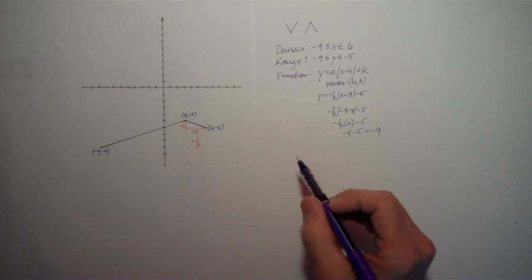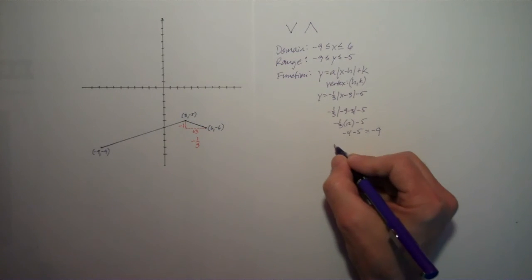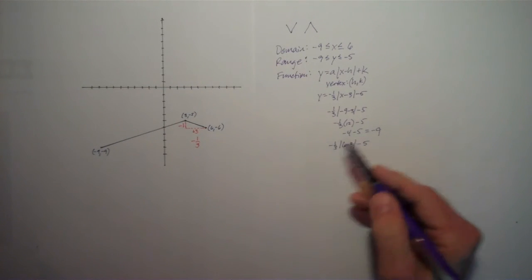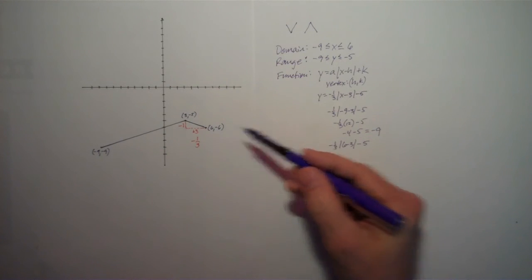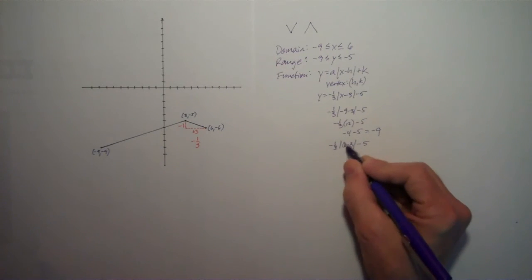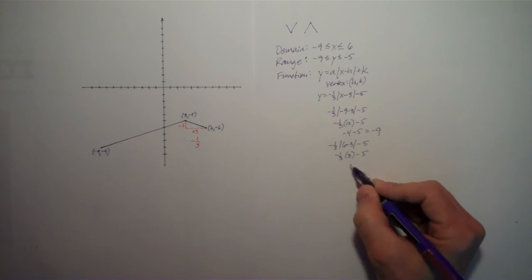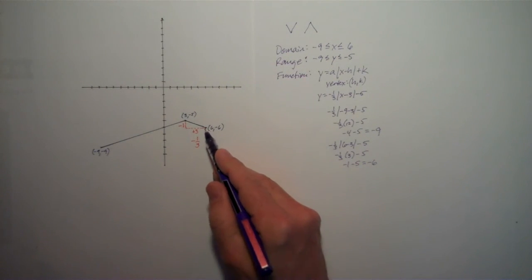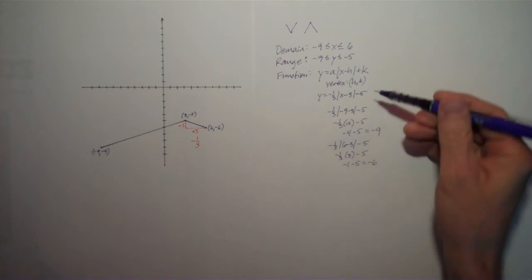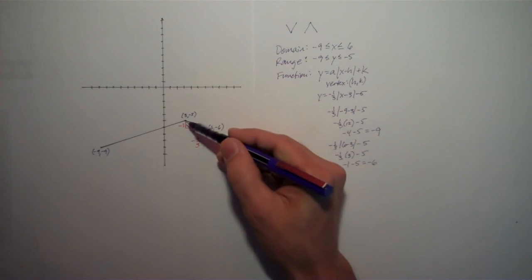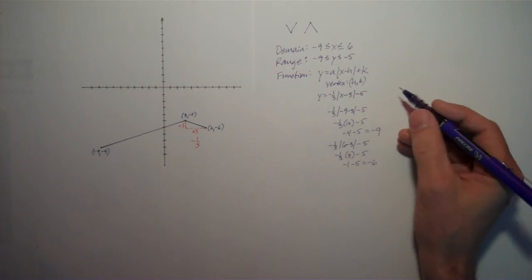And let me just try the x-coordinate, 6, negative 6. If I take negative 1 third times the absolute value of 6 minus 3 minus 5. I'm just replacing the x variable with 6. I get 6 minus 3 is 3. The absolute value of that is still 3. So negative 1 third times 3 minus 5. Negative 1 third of 3 is negative 1. Minus 5 is negative 6. And sure enough, that is the y-coordinate. So I know that both this point and this point are on my graph of the function, y equals negative 1 third absolute value of x minus 3 minus 5. And I also know that the vertex is there because it's really built into the function. So I'm feeling real good about this now.